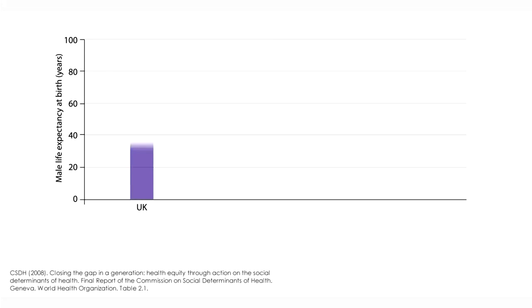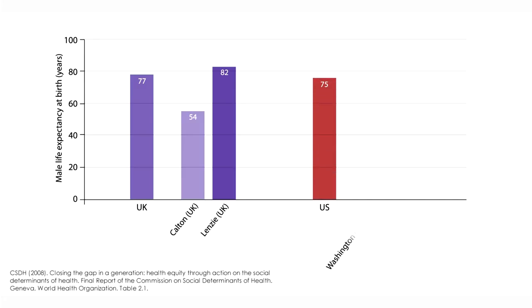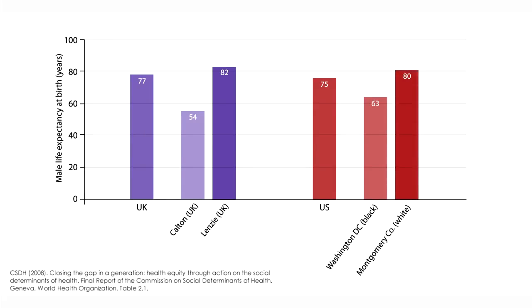For example, in the United Kingdom there is a huge difference in life expectancy between one county and another. Whereas one county has a life expectancy of 54 years, another county has a life expectancy of 82 years. Even within the U.S., there are considerable differences in life expectancy between different counties. Where in Washington you have a predominantly black population, you have 63 years of life expectancy, whereas in Montgomery County, which is predominantly white, you have a life expectancy of 80 years.